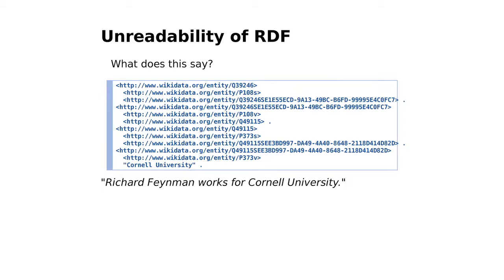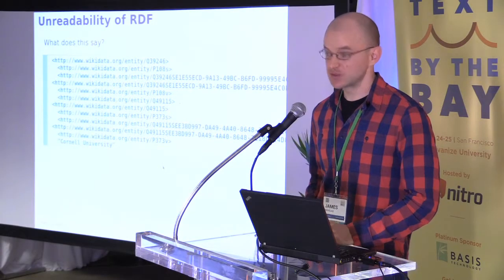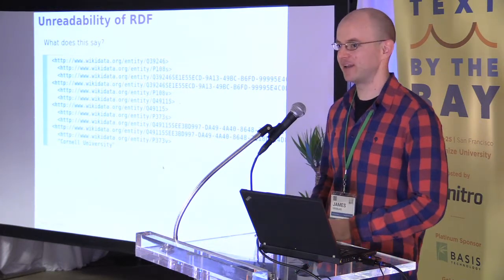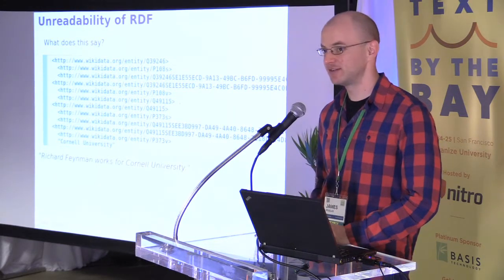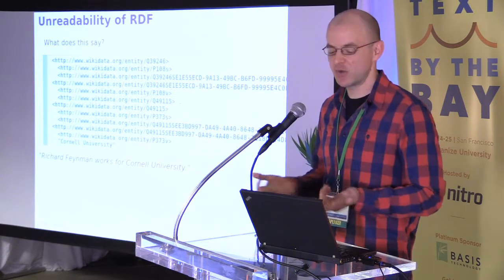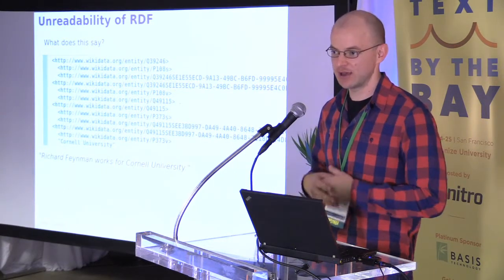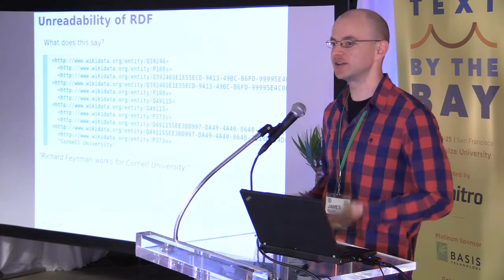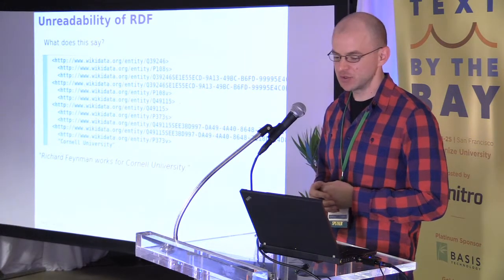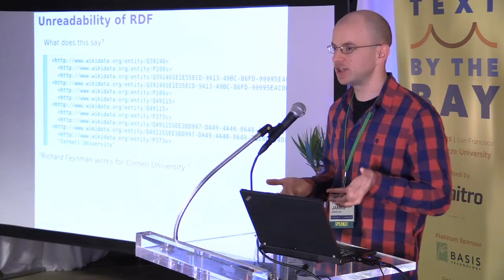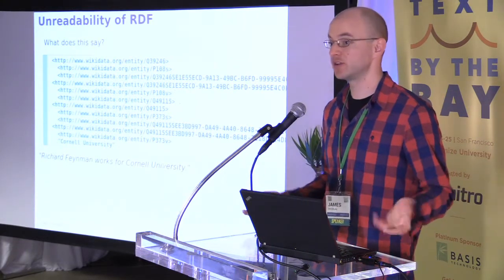As evidenced by the fact that this doesn't even fit on a slide, here's a hypothetical question: what does this say? We're actually looking at four RDF statements, four triples, and these are real triples — this actually says something. But as you can tell, you can't read it. It turns out this says that Richard Feynman works for Cornell. Why is such a simple idea so noisy? It comes back to statements — statements are inherently simple, and it's difficult to use them in a way that expresses complex information without a combinatorial explosion of statements.